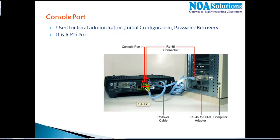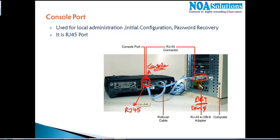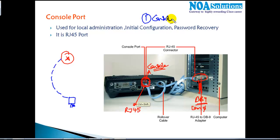The console cable has one side with an RJ45 connector which connects to the console port on the router, and the other side has a DB9 (9-pin) connector which connects to the COM port on the back of your computer. This is called a console connection.